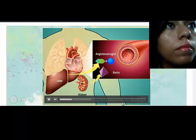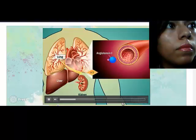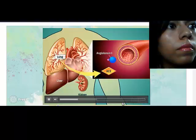An enzyme, renin, is secreted which cleaves angiotensinogen to form the inactive decapeptide angiotensin-1. Further transformation of angiotensin is carried out by angiotensin-converting enzyme, or ACE. This is predominantly found in the pulmonary circulation.